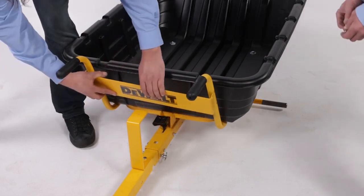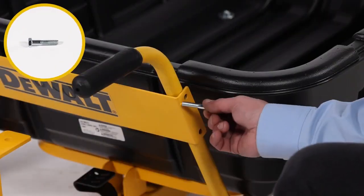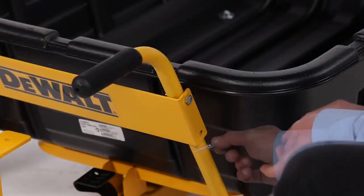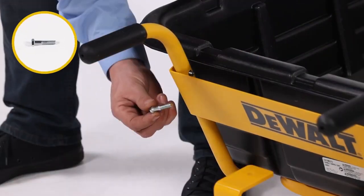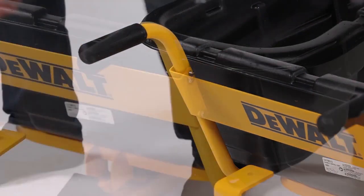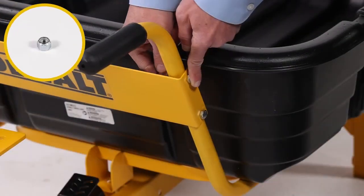Now align the handle support plate, Part 7, and secure it with 4 5/16 inch by 1 1/2 inch bolts, Part G, and 4 5/16 inch Nylok hex nuts, Part J.